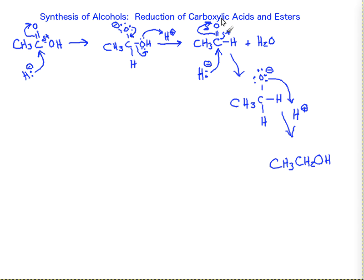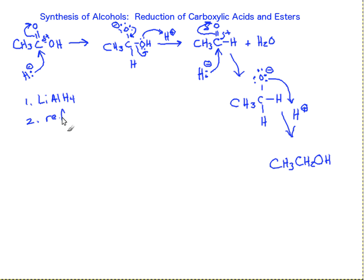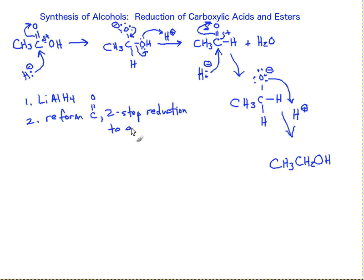So with carboxylic acids and esters, it's important to remember two things: one, you have to use the more potent lithium aluminum hydride as your reactive hydride source; and two, we're going to reform our carbonyl group, and that's going to lead to a two-step reduction process to give us our final primary alcohol.